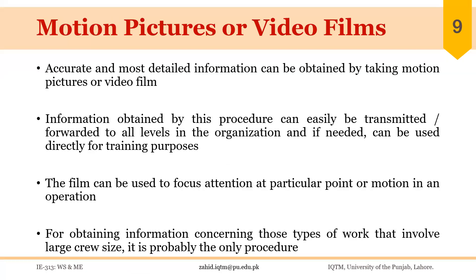Finally, we have motion pictures or video films. Accurate and most detailed information can be obtained by taking motion pictures or video film. Information obtained by this procedure can easily be transmitted to all levels in the organization and if needed can be used directly for training purposes. The film can be used to focus attention at a particular point or motion in an operation. For obtaining information concerning work that involves large cycle size, it is probably the only procedure. For certain charts and diagrams — for example, the two-handed chart or the SIMO chart — we do need videos of the process. Similarly, for thermolix analysis, video recording of the process is required. So videos can be used alone to analyze the process or they can assist in making certain charts.